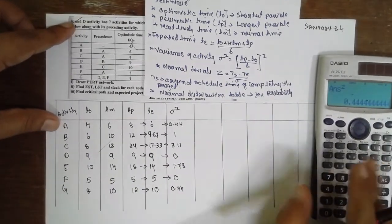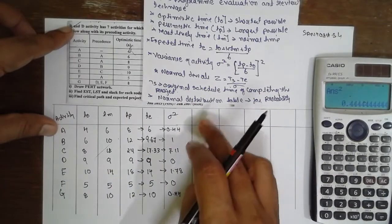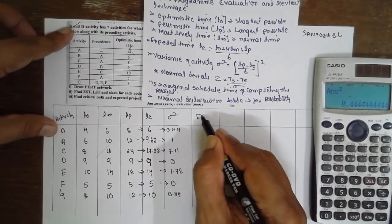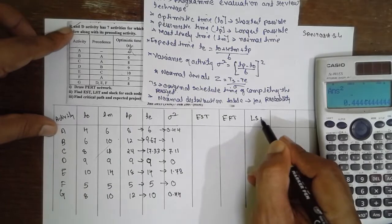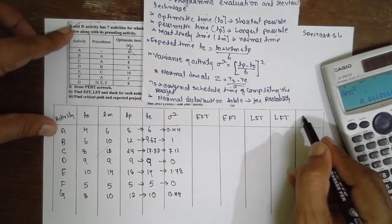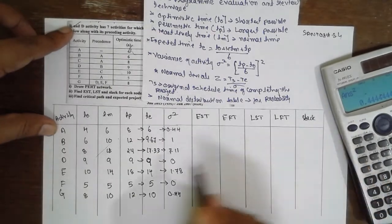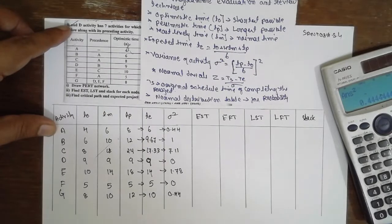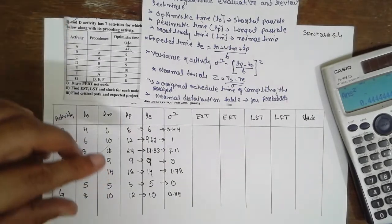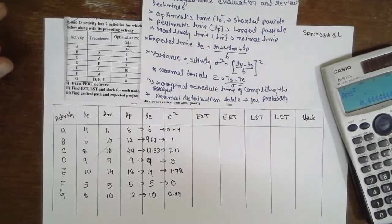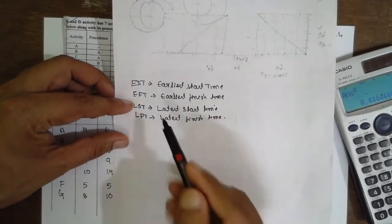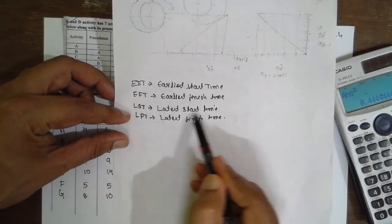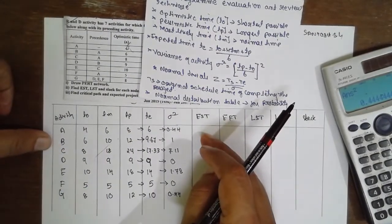After completing the table, we require EST (Earliest Start Time), EFT (Earliest Finish Time), LST (Latest Start Time), LFT (Latest Finish Time), and Slack. These values are obtained using the network diagram.